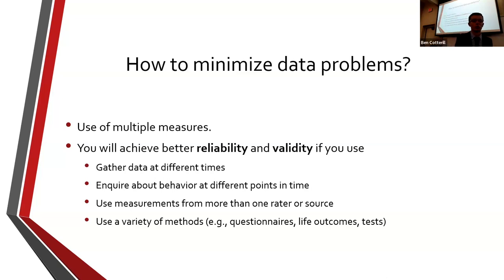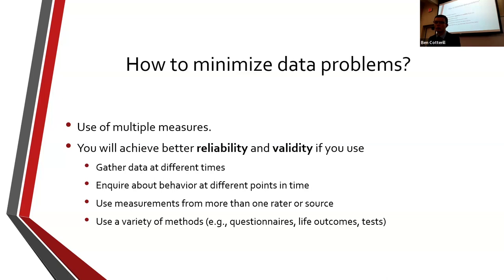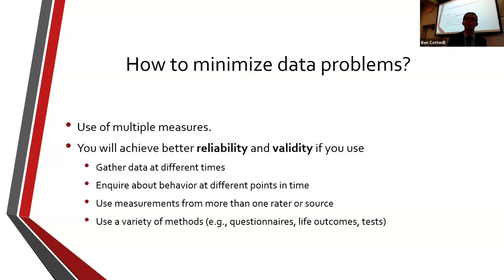I'll talk more about reliability and validity. You probably have a gist of what these mean — the consistency of the measurement, and how well it's actually measuring what I want it to measure. We achieve better reliability and validity if we're gathering data at different times, because maybe your mood could impact your performance on a test or questionnaire. With multiple measurements from multiple time points, it's less likely these sorts of factors will impact the results.